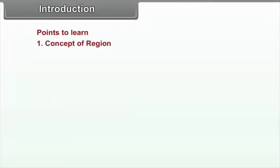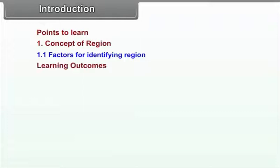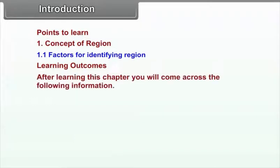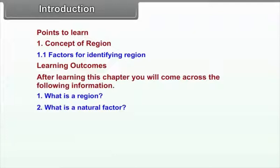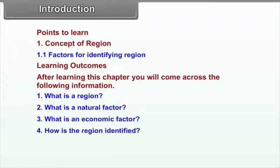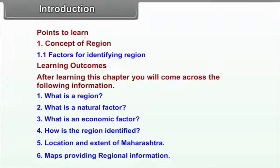Standard 9 Geography, Chapter 1: Concept of Region. Points to learn include the concept of region and factors for identifying a region. After learning this chapter, you will come across the following information: What is a region? What is a natural factor? What is an economic factor? How is a region identified? Location and extent of Maharashtra, and maps providing regional information.